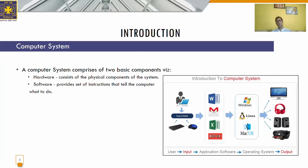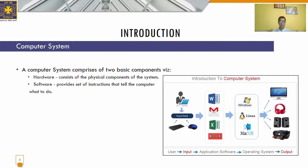Before we start, we need to know what a computer is. A computer is a machine or device that performs processes, calculations, and operations based on instructions provided by the user. A computer cannot think or perform on its own. It performs operations like addition, subtraction, multiplication, and other data processing tasks and various multimedia tasks if instructions are given by the user. The user issues the instruction and the CPU acts in accordance with that instruction.